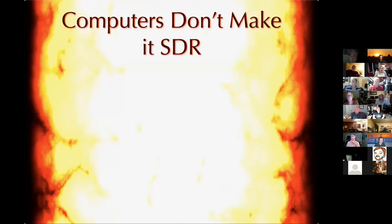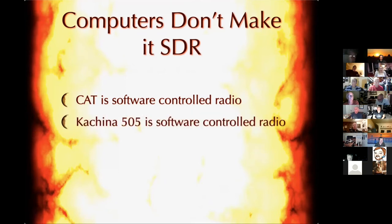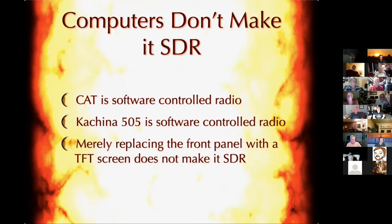Another point: computers don't make it SDR. CAT is software-controlled radio, not software-defined radio. Just because you have an Ethernet or USB connection to change the frequency or transmit doesn't make it a software-defined radio. The big one from the olden days is the Kachina 505 — it had nice displays you could put on your PC and you could control it all over the PC, but it's a software-controlled radio. It's analog radio where all the controls were done digitally over a serial port. Merely replacing the front panel with a TFT screen doesn't make it SDR.